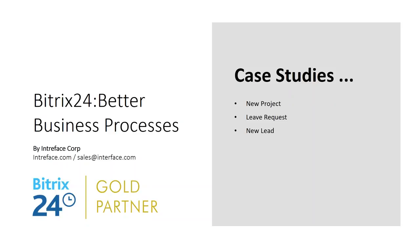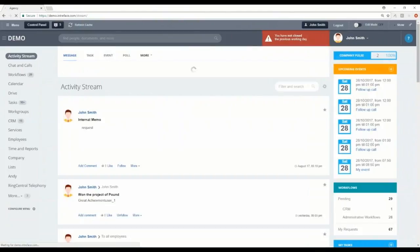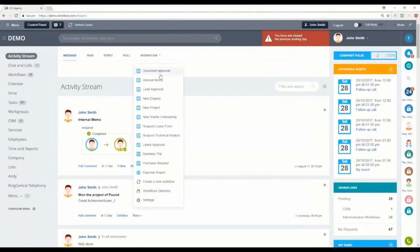Now we're going to look at some live examples and case studies. We'll look at a process for creating a new project, a standard process for leave requests, and then finish with a process that uses automation tools within the CRM. Starting with the activity stream — under More and then Workflows — we have the New Project process.